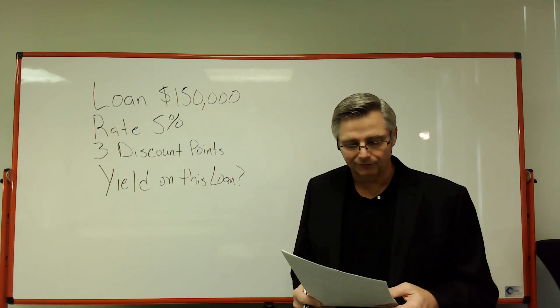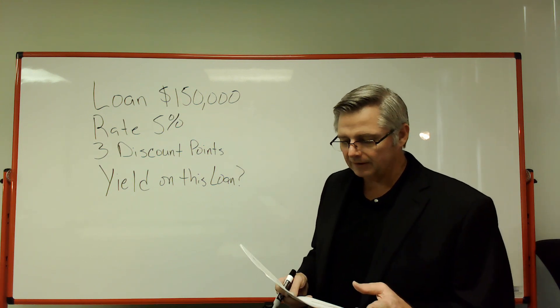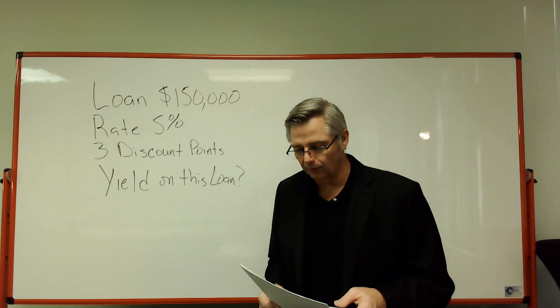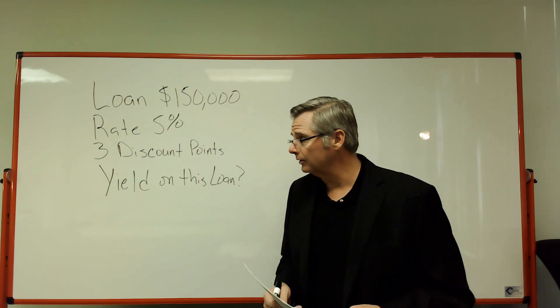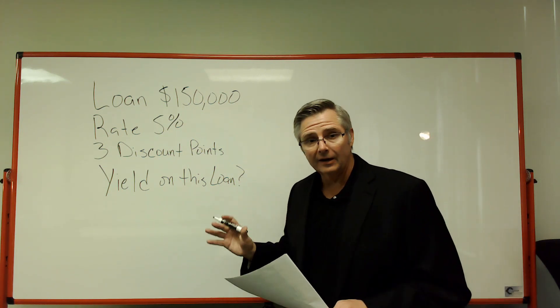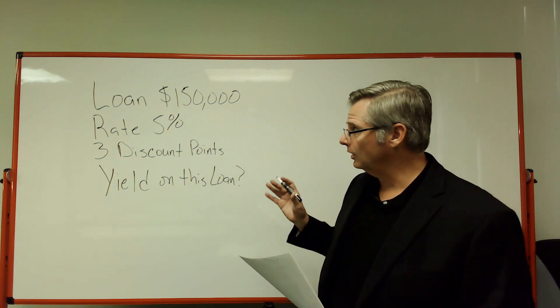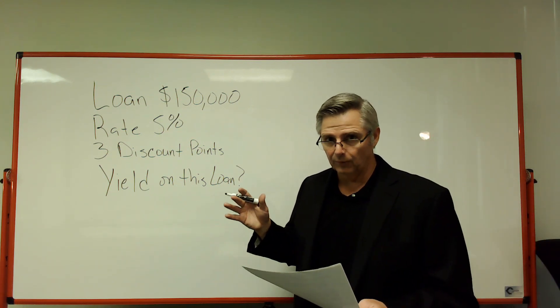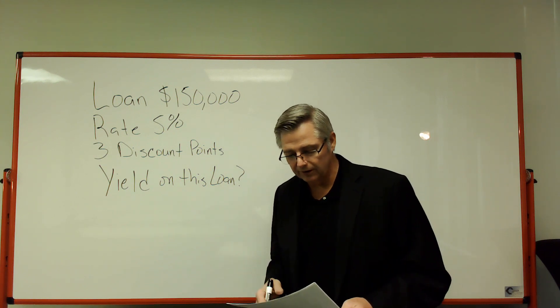This is question number five. A loan is for $150,000, the rate is 5% with three discount points. What is the yield on this loan? I have gone ahead and written everything out: loan for $150,000, 5% rate with three discount points. What is the yield on this loan?